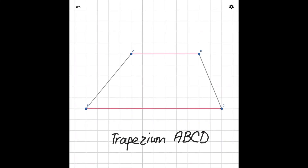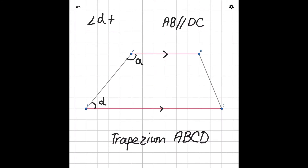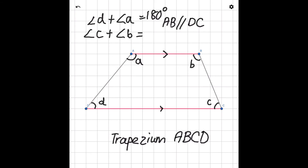The last property of a trapezium is that the sum of angles between the only pair of parallel sides is 180 degrees. The only pair of parallel lines is line AB parallel to line DC. After identifying the parallel sides, we find angles that form 180 degrees: angle D plus angle A gives a sum of 180 degrees, and angle C plus angle B also gives 180 degrees.